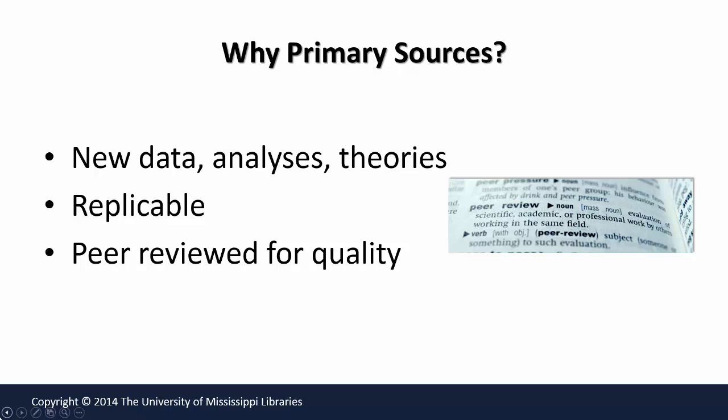Why are we interested in reading primary sources? Scientific journal articles are where scientists present the results of research that they did. The research was done to try and answer a specific question. The results of the research may be interpreted by the scientists to help explain a phenomenon, to develop a new theory about how something works, or to present new data to support or contradict previous research.